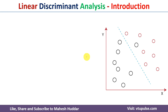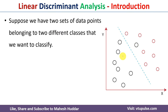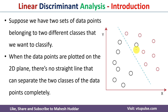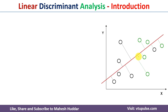Let us take an example. In this case, the data is shown on 2D space. This data contains two classes — one is represented with red color and another with black color. If you want to classify this data with the help of a straight line, that is not possible, because if you draw a line anywhere, you will not be able to classify the data completely. So what we need to do is convert this 2D data into 1D data, so that we will be able to classify this data completely. We can use LDA for that particular purpose.